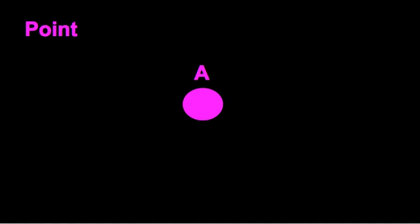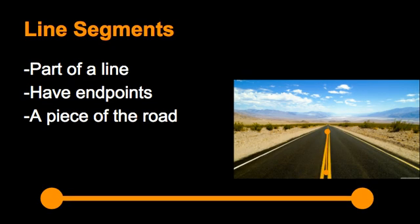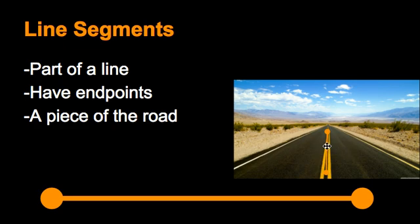Sometimes you can have more than one point. And when you have two points, such as here and here, you can connect them with a straight edge, like a ruler. And what you end up with is a line segment. A line segment is part of a line. It has endpoints, such as here and here. I like to think of it as if there was a road — it would be a piece of the road, like maybe between a stop sign and the next stop sign down the road. It's just a little piece of that road, because the road goes on and on forever.